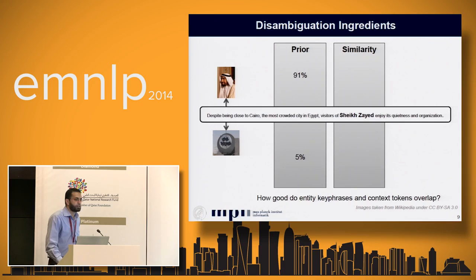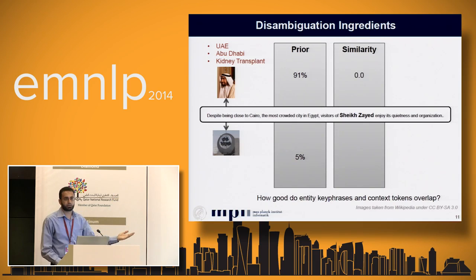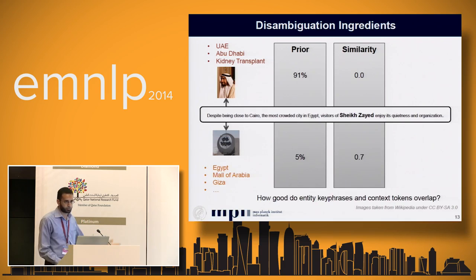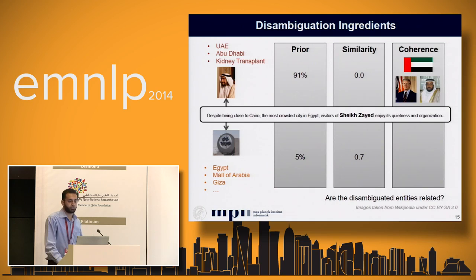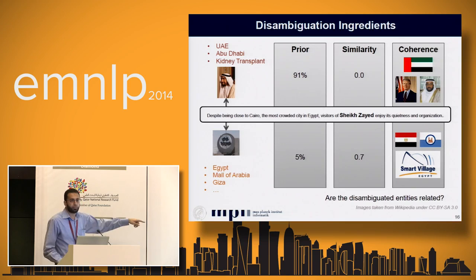Then we compute similarity: for each entity we associate a set of characteristic key phrases. For the former president these might be Abu Dhabi, kidney transplant, etc., and we compute the overlap between those key phrases and the input text — in our example this will be zero for that entity. For the city in Egypt, the key phrases yield slightly higher similarity since that is the correct one. We also consider related entities for each candidate and try to ensure that the entities we pick are all semantically related. For instance, since Egypt appears in the sentence and will also be annotated, it would boost the score of the city in Egypt entity.